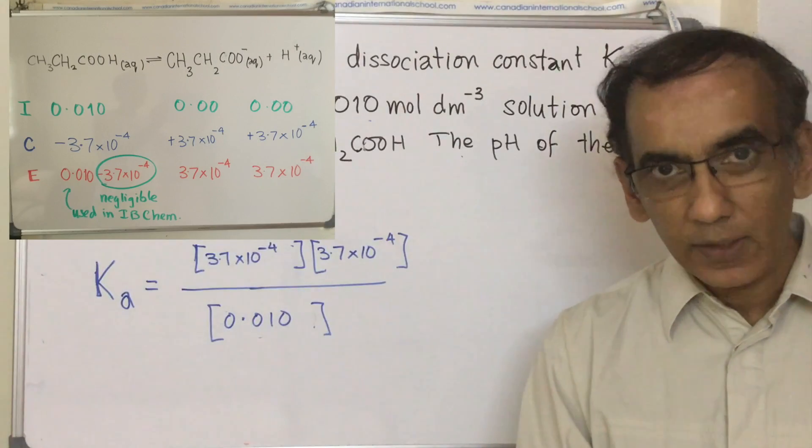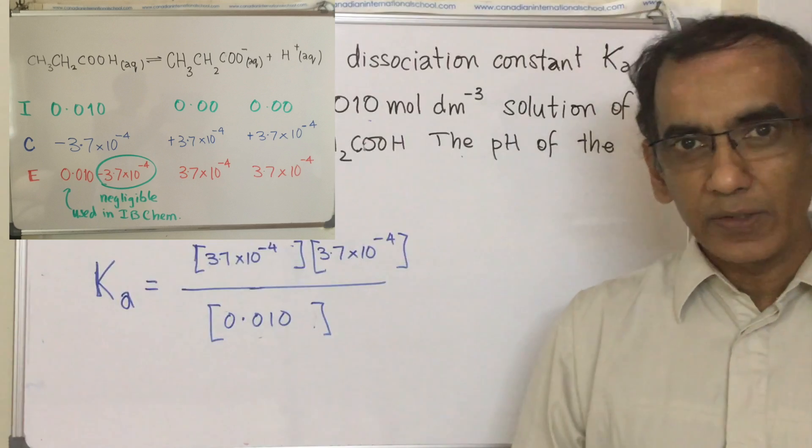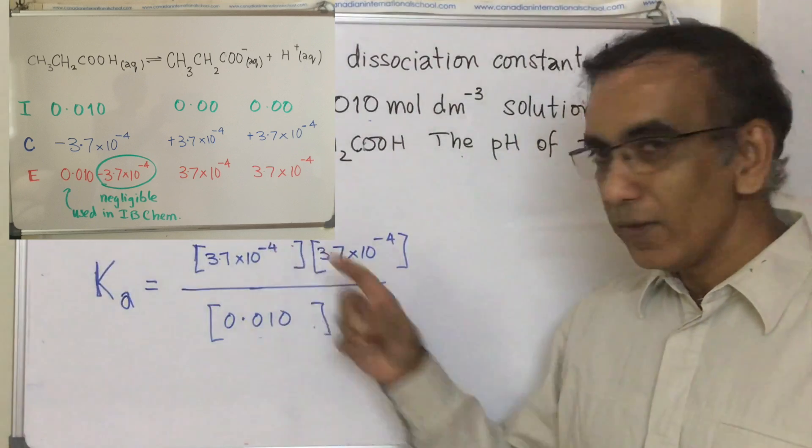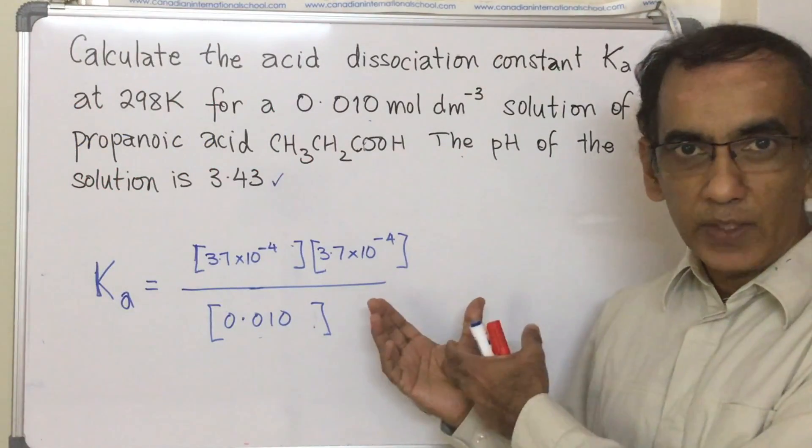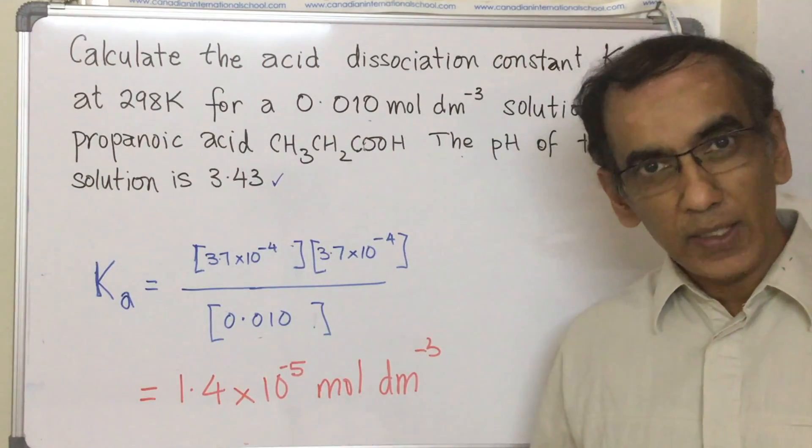Noting that we should theoretically subtract something, but in the end it won't make much of a mathematical difference to the answer because this number is so much larger than this one. And the final answer when you solve this is 1.4 by 10 to the minus 5 moles per dm³.